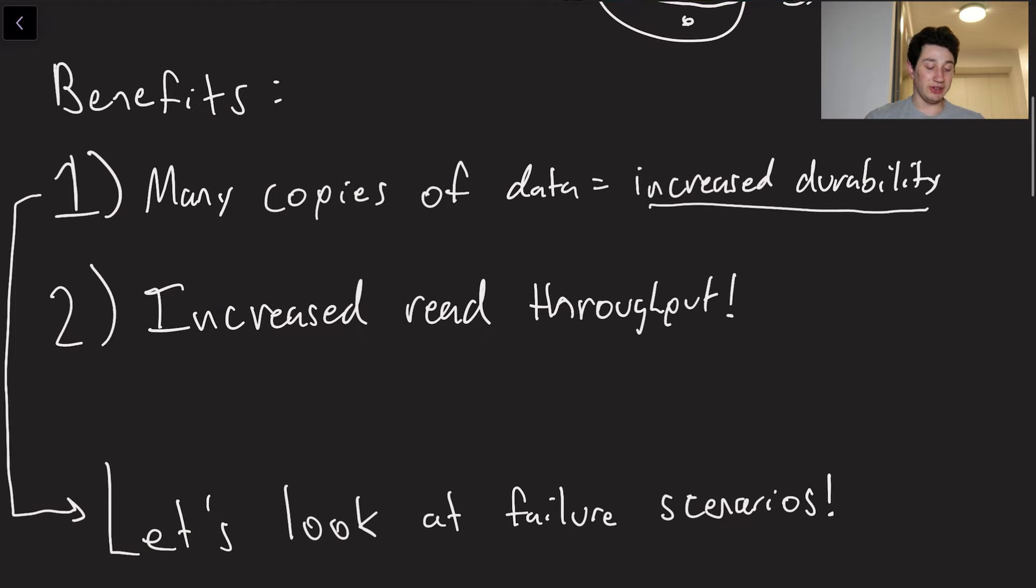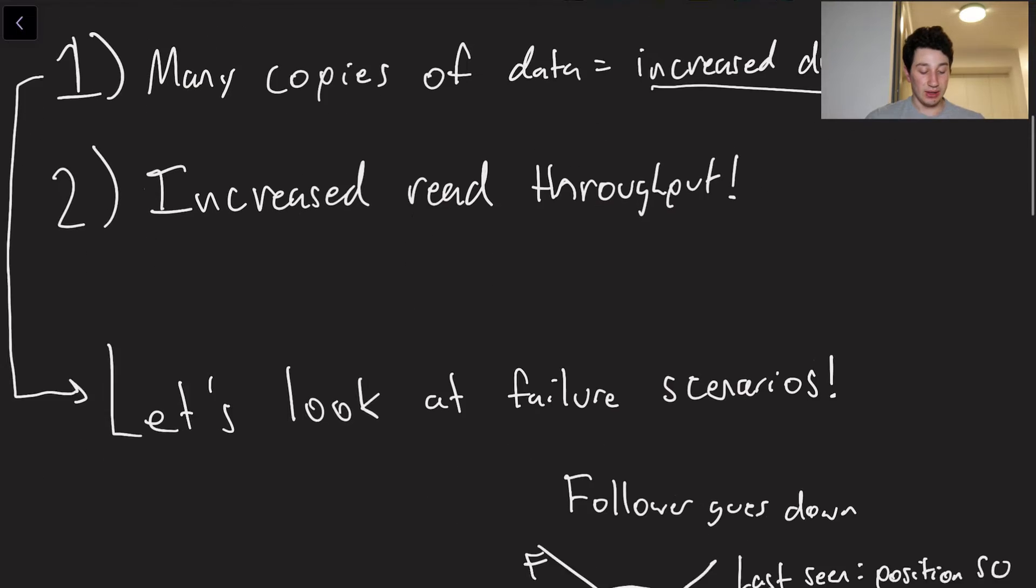So let's look at a couple of failure scenarios, because the entire point of replication, aside from increasing read throughput, and sometimes, but not in this case, increasing write throughput, is to basically make sure that in the event of failures, we still have a working system. So let's look at a couple of these.